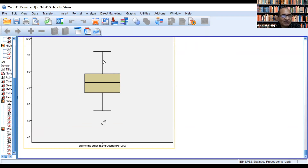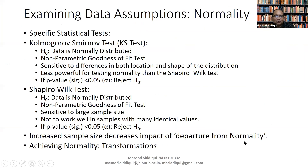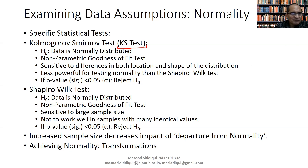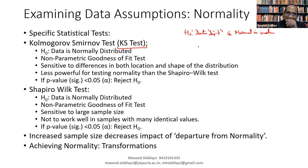There are many considerations to decide whether our distribution is normal or not, because there is no single perfect tool that is comprehensive enough to assess normality. We have to consider a number of tools to decide about the normality of the data. The last tool is statistical testing, where we perform two tests: the Kolmogorov-Smirnov test, better known as the KS test, and the Shapiro-Wilk test.